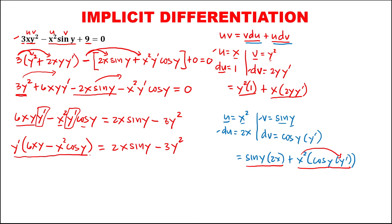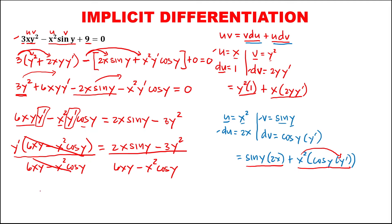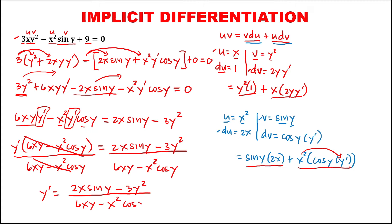Then to solve for y prime, divide both sides by 6xy minus x squared cosine y, and also this side 6xy minus x squared cosine y, so cancel. So we have now y prime equals 2x sine y minus 3y squared, all over 6xy minus x squared cosine y. So this is now the derivative.